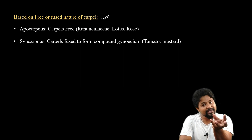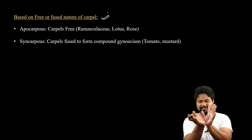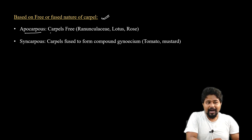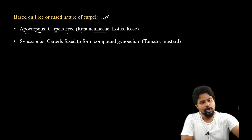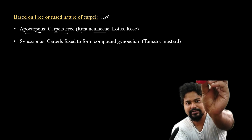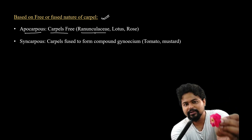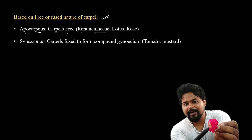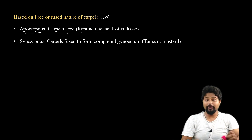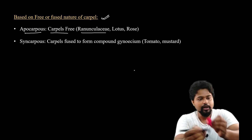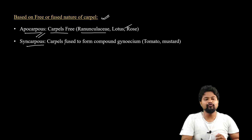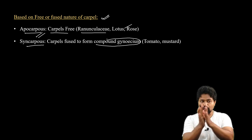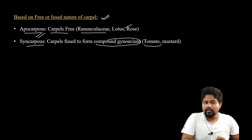Next, based on the free or fused nature of carpels: if carpels are free from each other, that condition is called apocarpous, where each carpel is individually visible and free. If carpels are fused together to form a compound gynoecium, that condition is called syncarpous — examples include tomato and mustard.